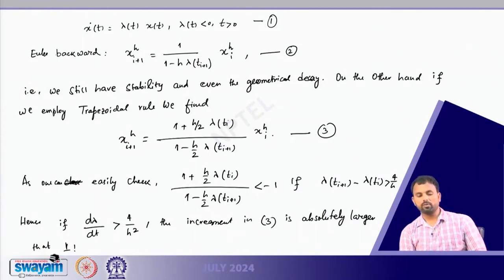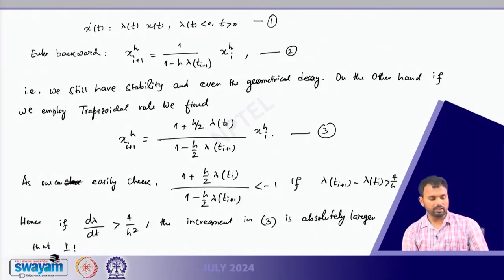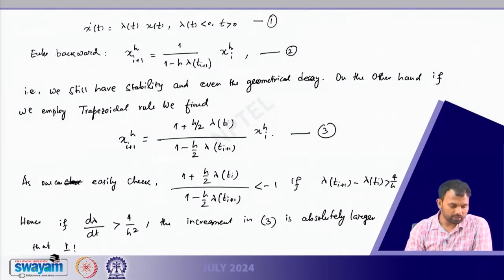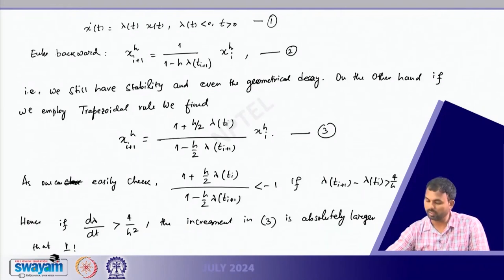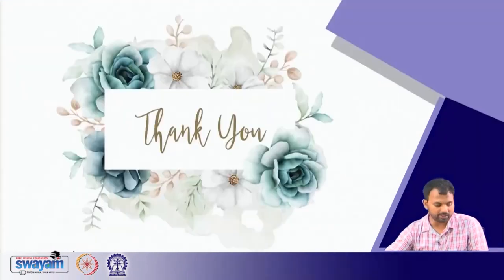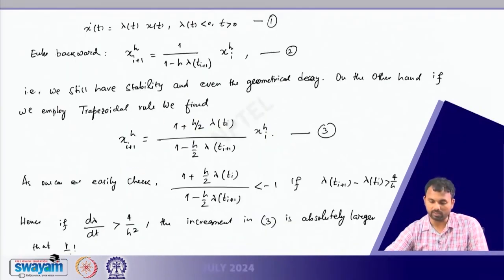Therefore, for this particular example, we can clearly see this gives asymptotic stability concerns.